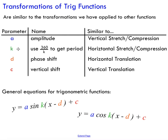The k value is used to get the period. The way we calculate the period is we divide 360 degrees by k. This tells us the number of complete cycles we go through in 360 degrees, and it's very similar to a horizontal stretch or compression.